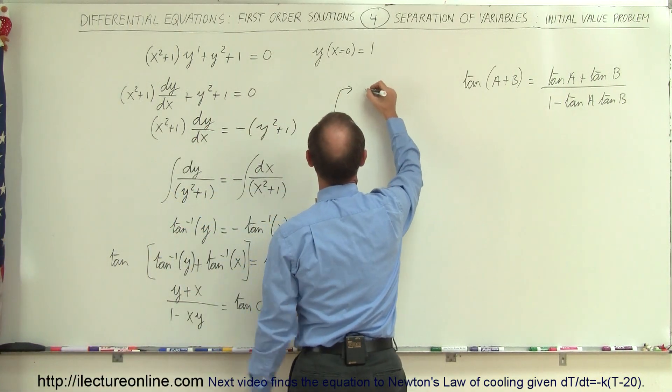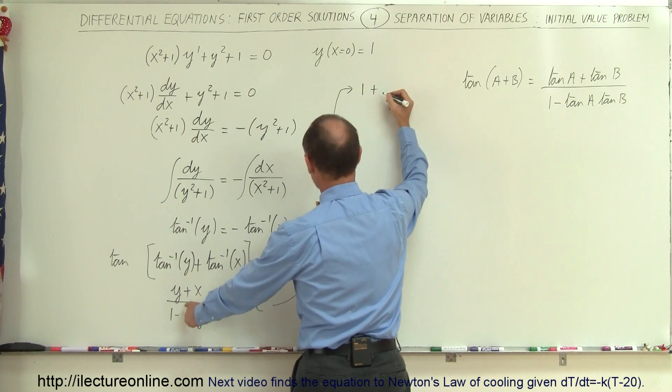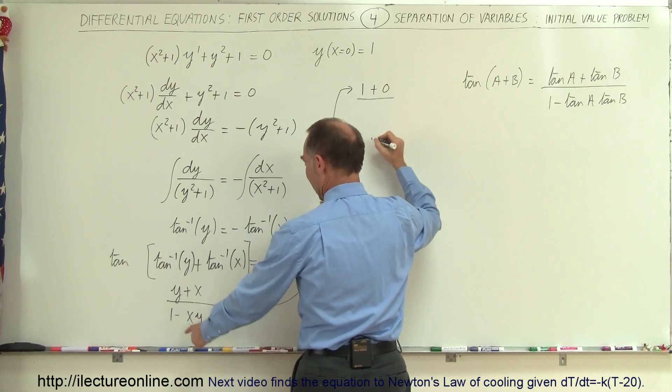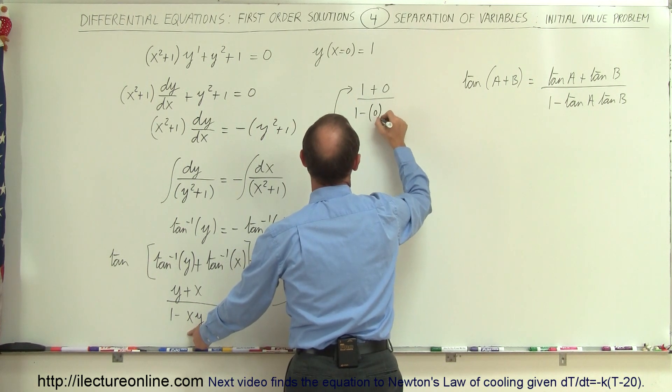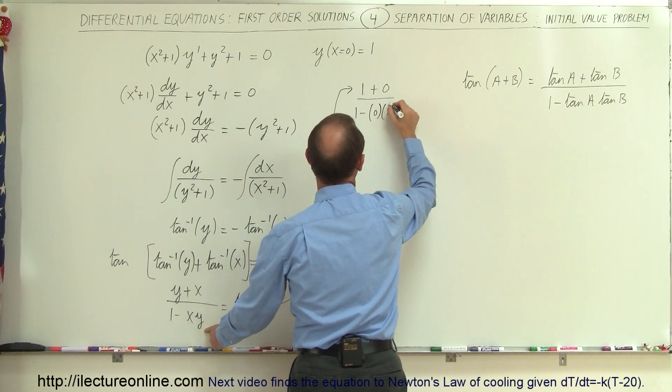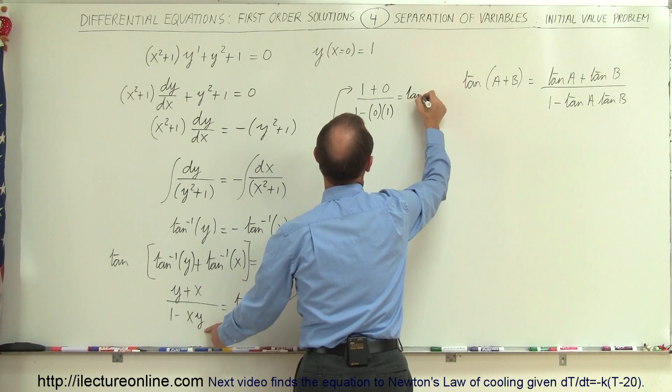So that means when y is equal to 1 + x which is equal to 0 divided by 1 - x would be equal to 0 and y would be equal to 1 and that equals tan(c).